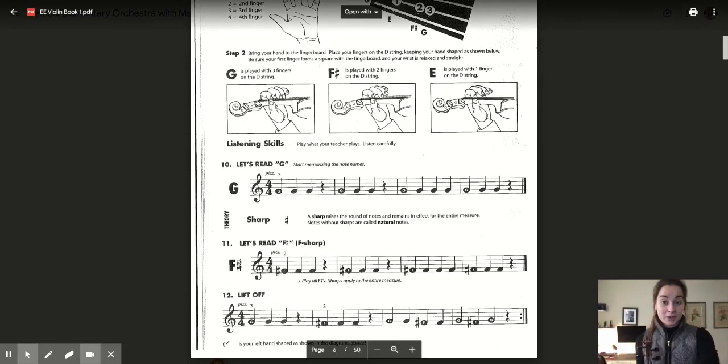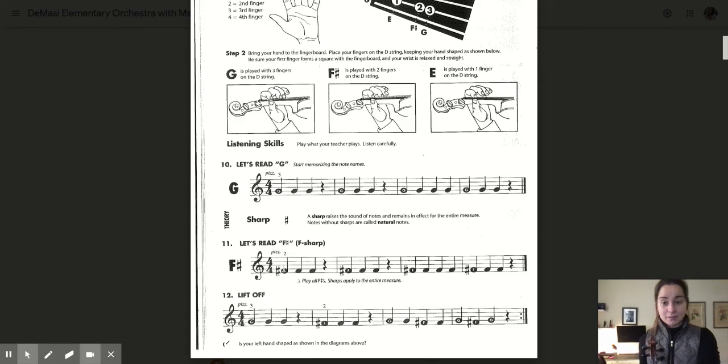And it's always a good idea to check in with your fingers to make sure they're on the tapes. F sharp for number 11, the whole way through is just two fingers on D as you can see above the note F sharp.